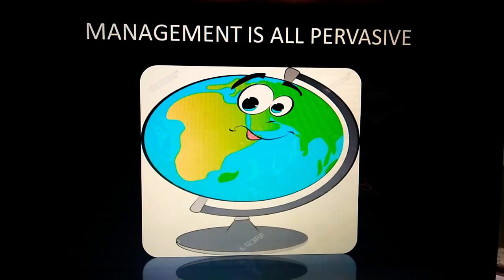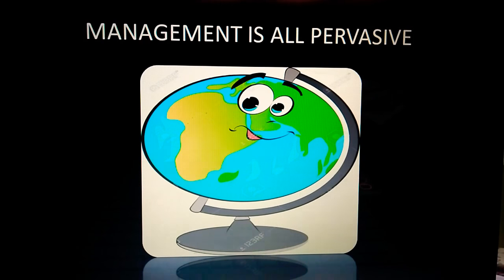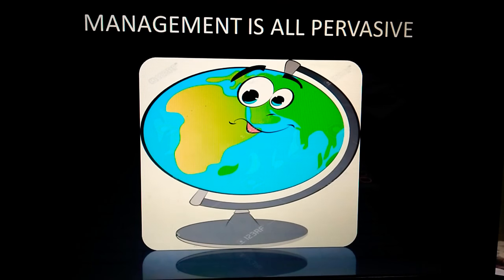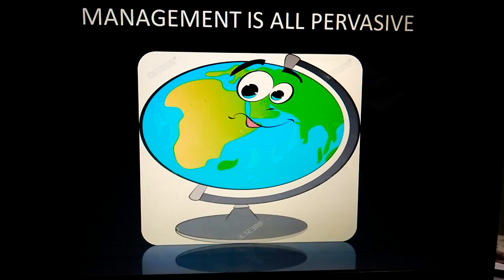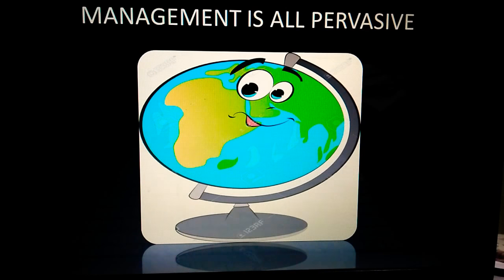The next point is: management is all pervasive. All pervasive means management applies everywhere in this world. If you observe — even when you go to your kitchen, you will see management. You open your cupboard, you see management. You go to a professional marketing institute, you see management there too. From the smallest task to the biggest task, everywhere you will observe something that is managed. That is why it is called all pervasive.